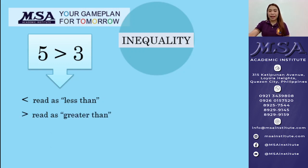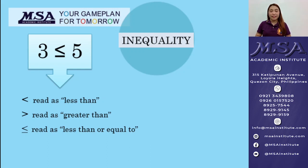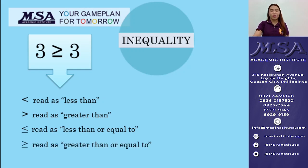Aside from that, we can also have 3 is less than or equal to 5, and that inequality symbol can be read as less than or equal to. Another example: we have 3 is greater than or equal to 3, and that inequality symbol can be read as greater than or equal to.